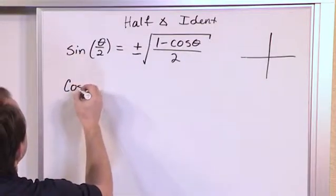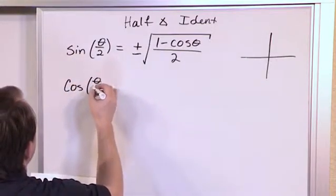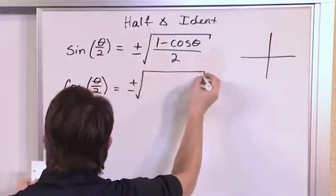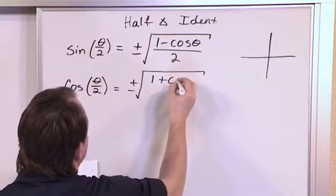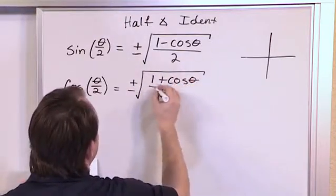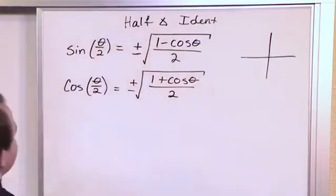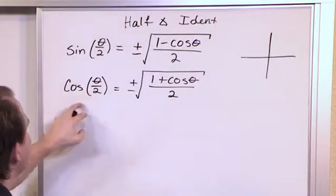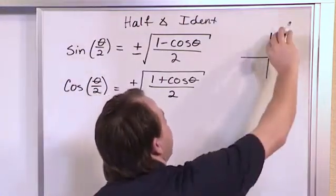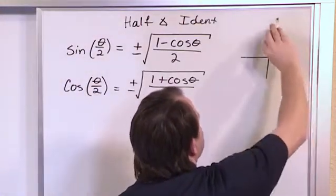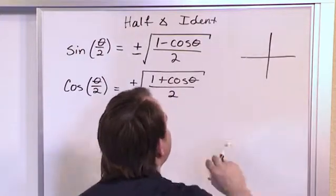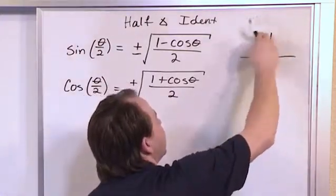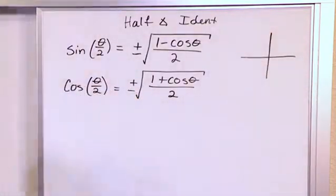The next identity is cosine of theta over two, and that's plus or minus the square root of one plus cosine of theta over two — again with a radical. When evaluating what sign to use, you look at where your angle falls. Any angles that fall where x is positive will use the positive sign in front of the radical. Any angles that fall on the left-hand side where x is negative use the negative sign.